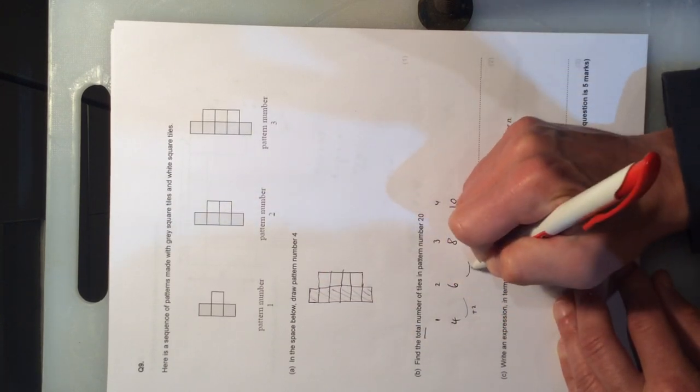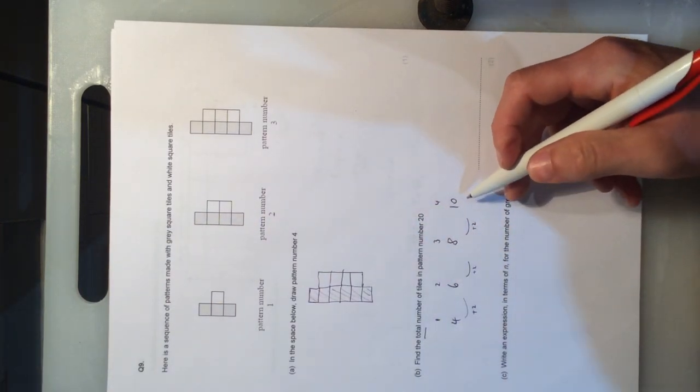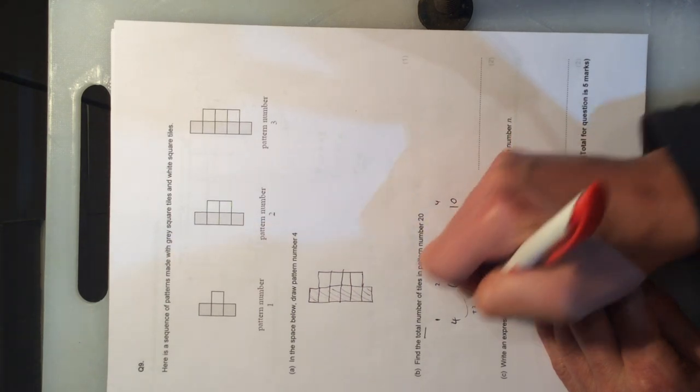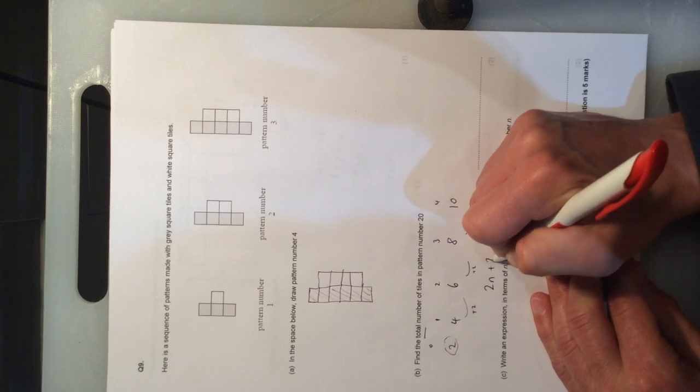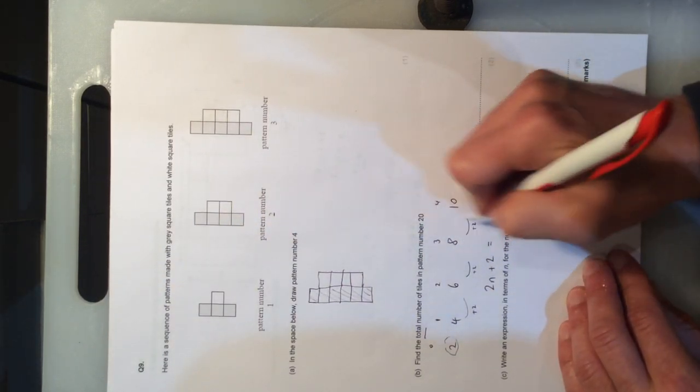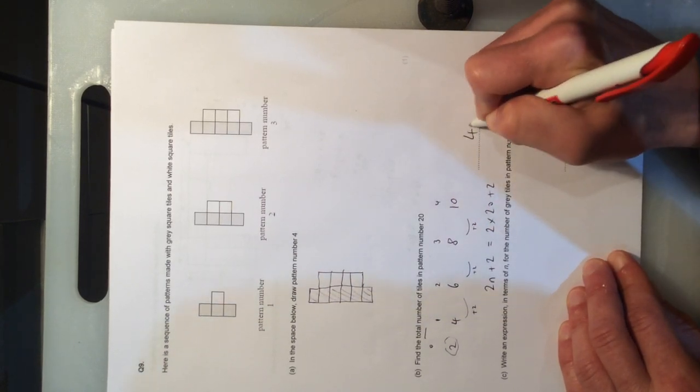Total number of tiles in pattern number 20. The total numbers for each of these patterns are 4, 5, 6, 7, 8, and I can see them going up in 2, and that would be 10 as well. So it's going up in 2 each time. I'm not asked for the nth term here, but I think this is probably the best way of doing it. The nth term would be 2n. The ghost number, or the zeroth term, take away 2, would be 2. So the nth term is 2n add 2. Therefore the 20th term, 2 times 20 add 2, 40 add 2, 42.